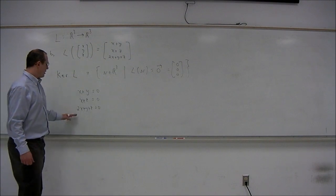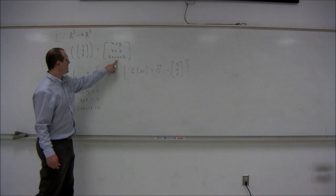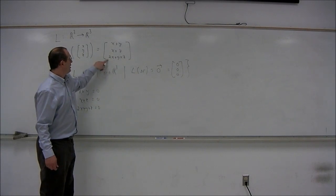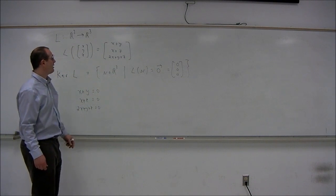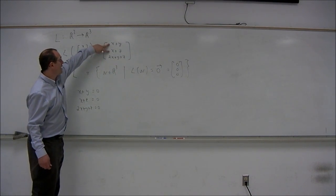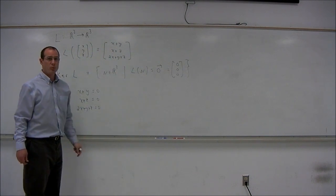I hope you noticed when I was writing these that this last equation, this last component here, was simply the sum of the first two. If you didn't notice it at first, have a look at it now. If you add x+y and x+z, you get 2x+y+z.